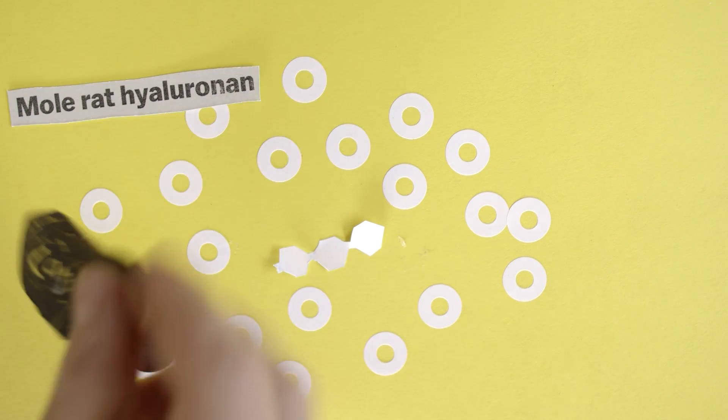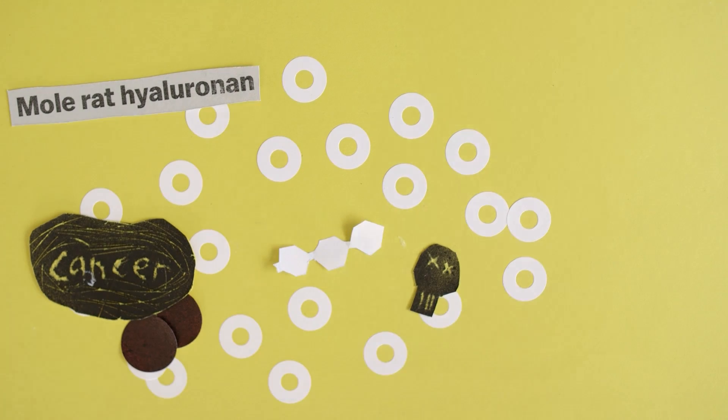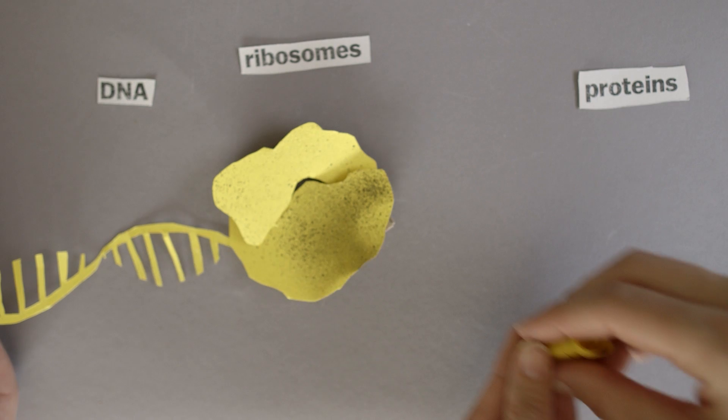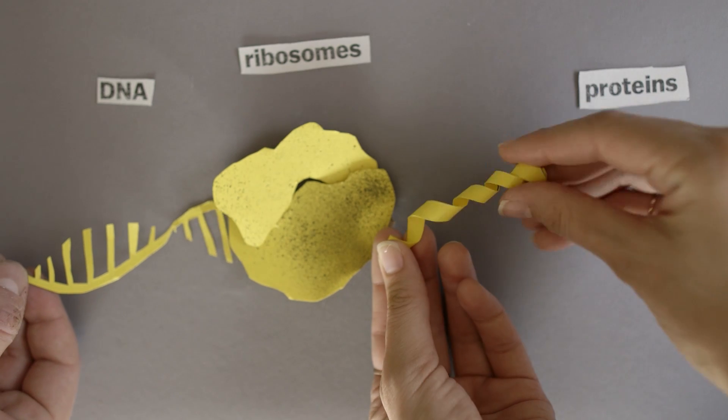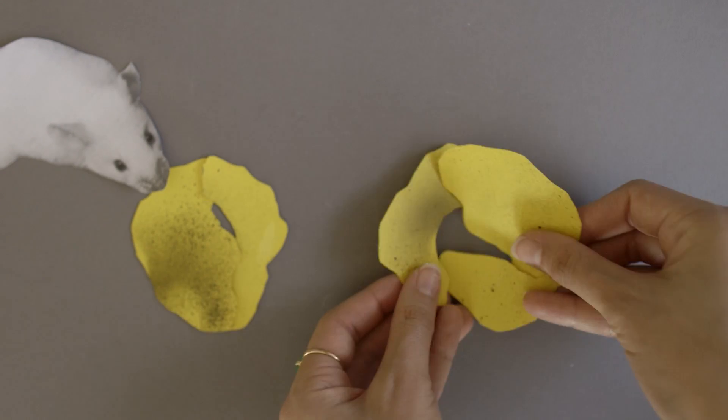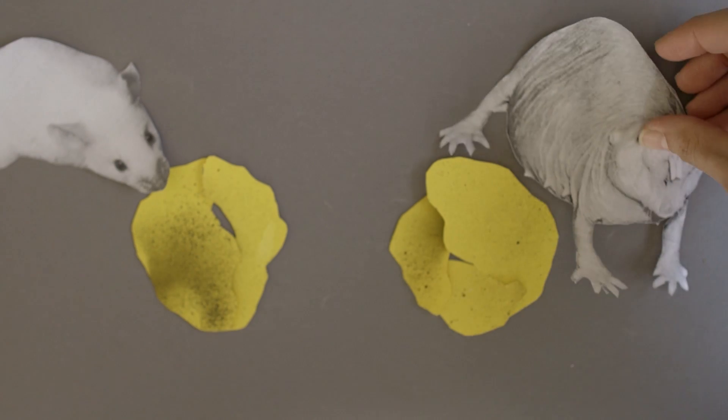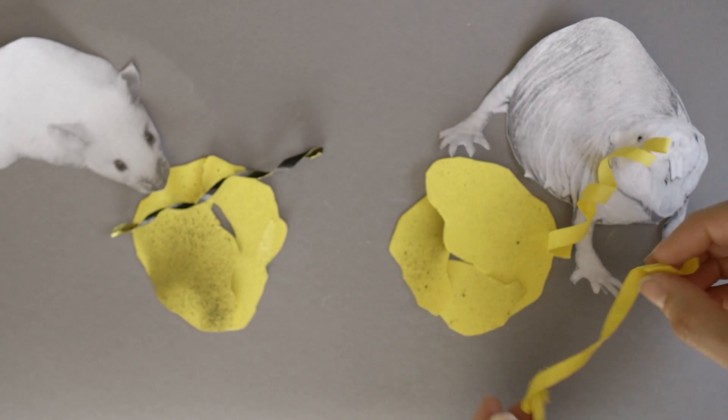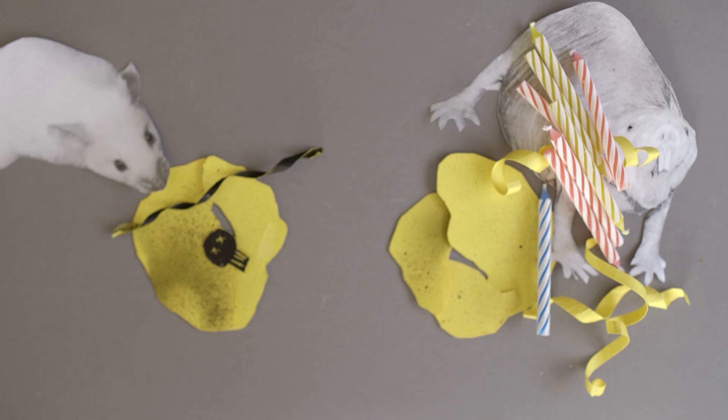Another thing that might be involved in these animals being able to live so long are these little things inside cells called ribosomes. So ribosomes are what take the genetic information in your DNA and translate that into proteins that allow your body to function, allow you to live. And almost every animal species has a particular structure to their ribosomes and has two pieces. Researchers have found that naked mole rats have these really weird ribosomes with three pieces. One hypothesis is that these strange ribosomes might be better at accurately translating DNA into proteins. They might make fewer errors.